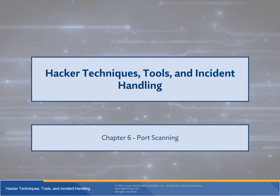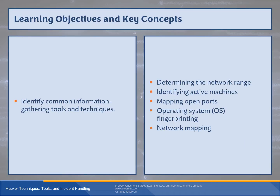Welcome back. We are getting started with Chapter 6 today, which is port scanning. We're going to look at how to identify some common information gathering tools and techniques. Our concepts for the day are determining a network range — a block of IPs or hosts in a given system — identifying active machines, mapping open ports, operating system fingerprinting, and network mapping.